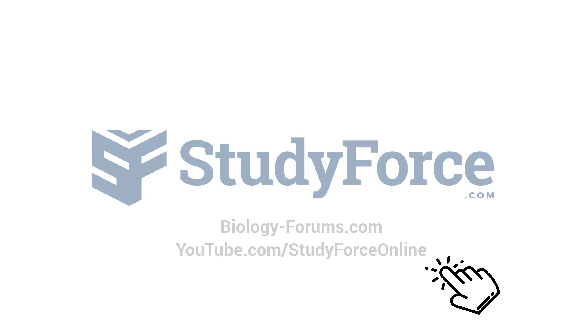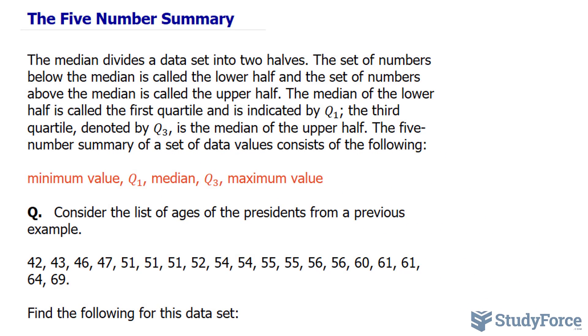In this lesson, I'll teach you how to split data into five parts. This is called the five number summary. Then I'll show you how to represent it visually using a box and whisker plot.